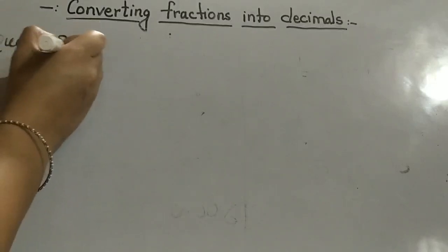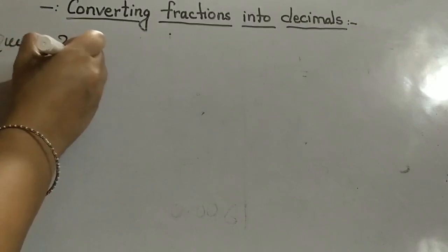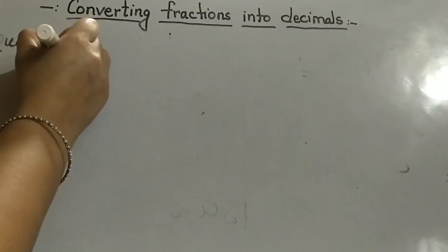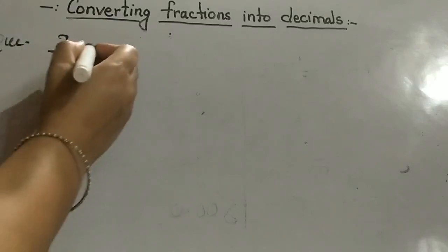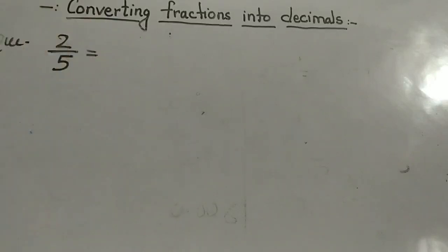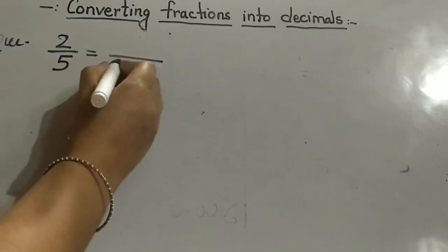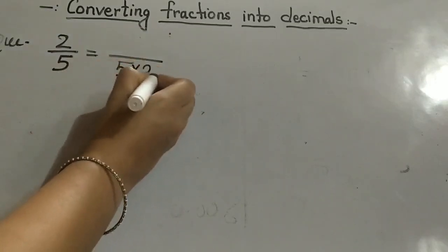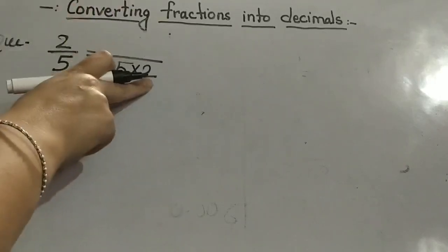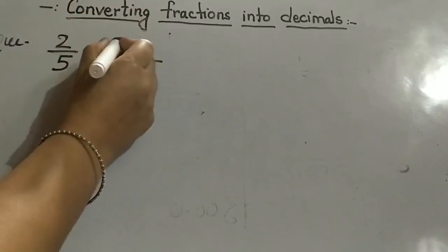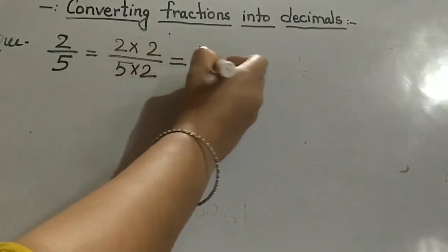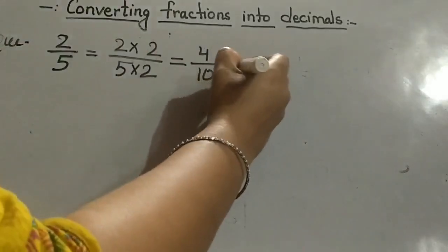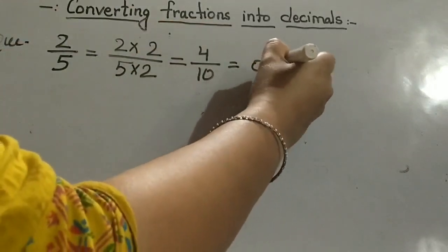Like 2 upon 5 - this is not the decimal fraction, so what will we do? First method: we can change it into a decimal fraction. So 5 times 2 are 10. If we are multiplying by 2 in the denominator, definitely we have to multiply in the numerator also. The answer is 4 upon 10, and the decimal will be 0.4.